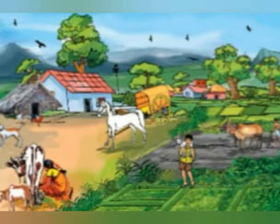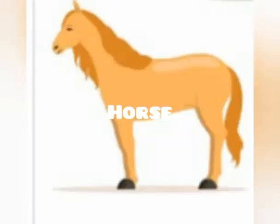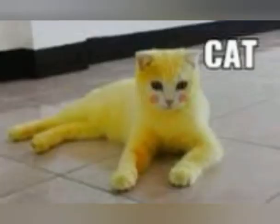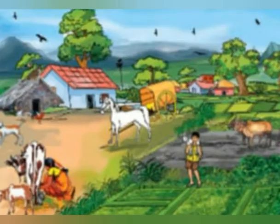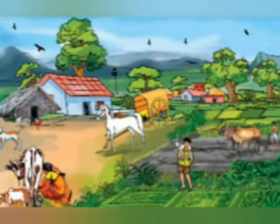Children, observe the farmer's house. What animals do you see? Yes — cow, horse, ox, dog, goat, cock, and cat. These animals are found in and around our homes. We take care of them and they help us in various ways. Such animals are called domestic animals. Some domestic animals help us in our farm work. They are called farm animals.